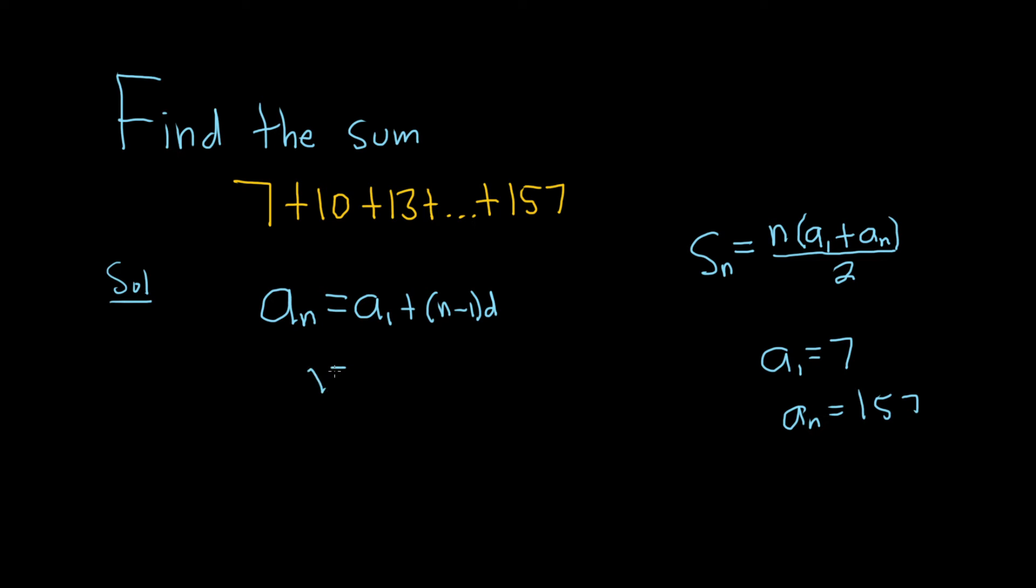So the nth term is 157, the first term is 7, and then here we have n minus 1, and it's pretty easy to see that d is 3. 7 plus 3 is 10, 10 plus 3 is 13, so d equals 3. Let's go ahead and plug that in.